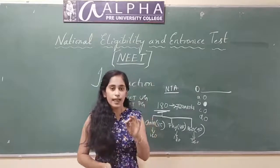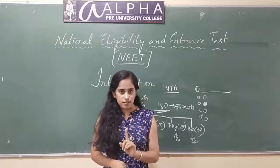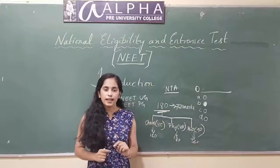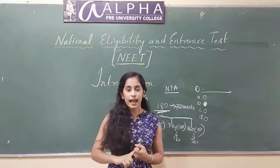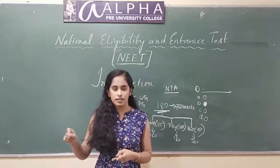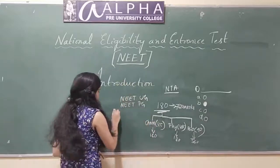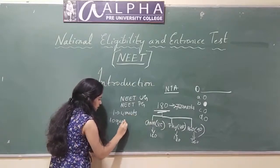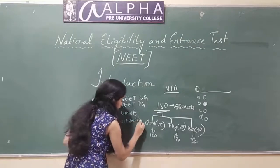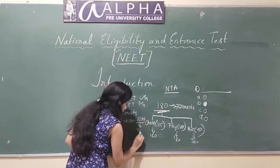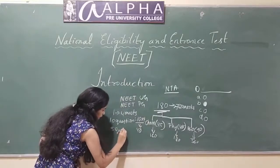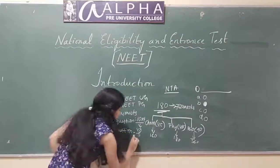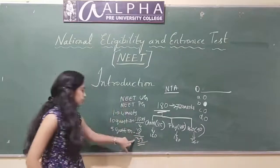There is negative marking also. If you mark 1 wrong answer, then 1 mark will be deducted from your scored marks. For example, if you answered 10 questions correctly — at 4 marks each, that is 40 marks — and marked 5 wrong answers, you will have minus 5 marks, so totally you will get 35 marks.